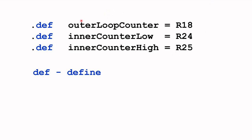The .def is an assembler directive. DEF stands for 'defined', and it can be used to give registers meaningful names. In our case, register R18 is given the name 'outer loop counter', register R24 is given the name 'inner counter low', and register R25 is given 'inner counter high'. These names are entirely at your discretion, but my advice is to give them meaningful names.